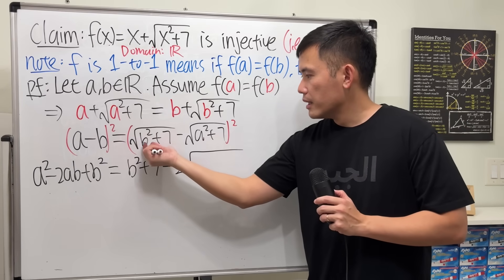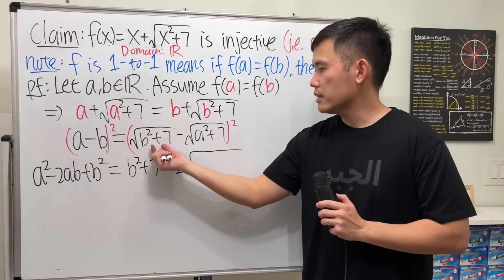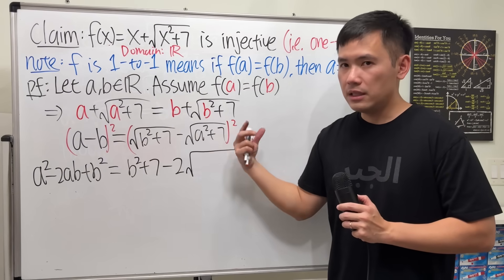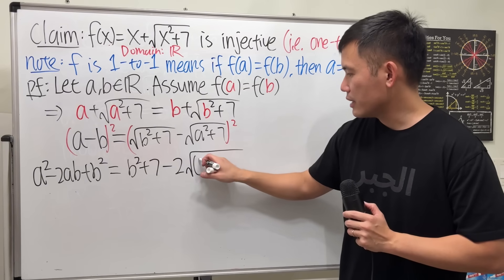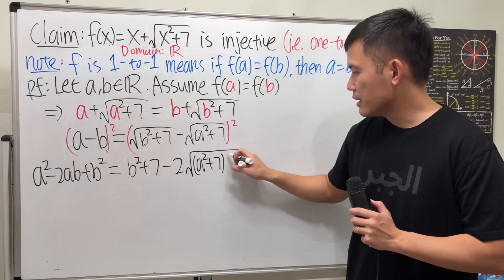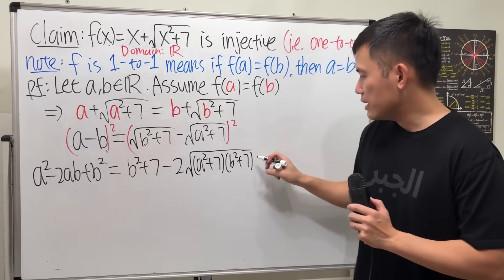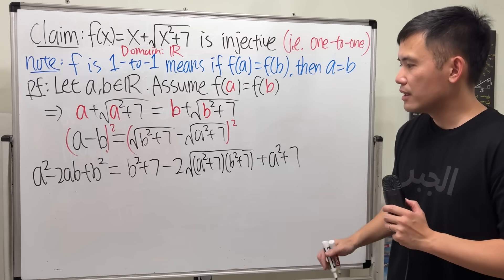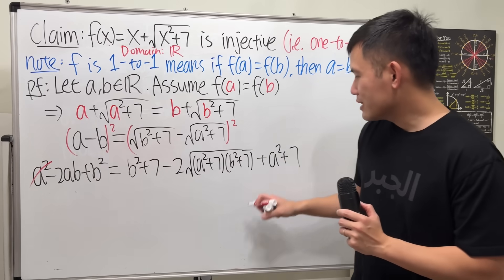Here's the deal. The inside here is always positive because we have b squared, right, and then plus 7. Likewise, this is always positive. So I can put the inside inside multiply. So I will just write, let me write down the a squared plus 7 first, and then b squared plus 7. And then right here at the end, we add this thing squared, which is a squared plus 7.